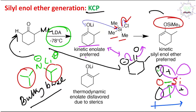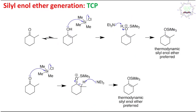In the case of LDA, the thermodynamically favored enolate is disfavored due to steric interaction. But how to generate the TCP, or thermodynamically controlled product? A different approach is used: the unsymmetrical carbonyl, a silicon chloride reagent, and a mild base — triethylamine — are all taken in the same pot. We know that in every carbonyl compound, a keto and enol form exist as tautomers.